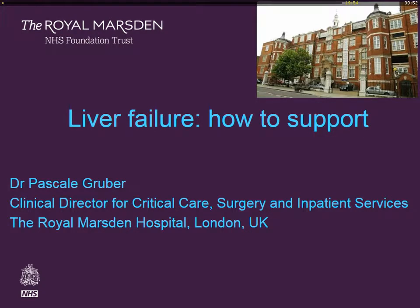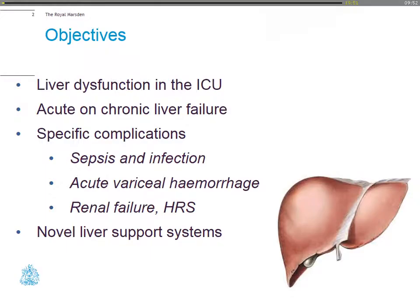Thank you very much. This is quite a large topic, so I thought we would focus on talking about liver dysfunction in the ICU, some consensus definitions on acute-on-chronic liver failure because there's been a lot of controversy about that, and then some specific complications including sepsis and infection, acute variceal hemorrhage, and renal failure, and then complete with a discussion about novel liver support systems.